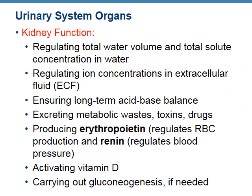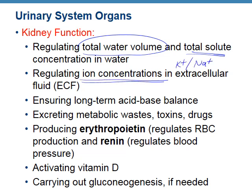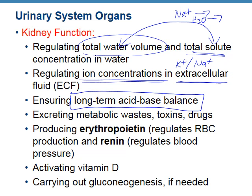When we look at this kidney function list, it's kind of overwhelming — your kidneys are doing a lot for you. They regulate your total water volume and total solute concentration, specifically ion concentrations like potassium and sodium. Water and solute are linked because wherever sodium goes, water follows — they're co-transported. It also regulates the amount of ions in the extracellular fluid, and ensures long-term acid-base balance. That has to do with carbonic acid — when you break it down, you get hydrogen ions and bicarbonate ions. We can release these in urine to adjust blood pH to keep it in the 7.35 to 7.45 range.